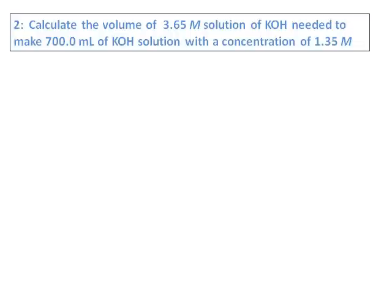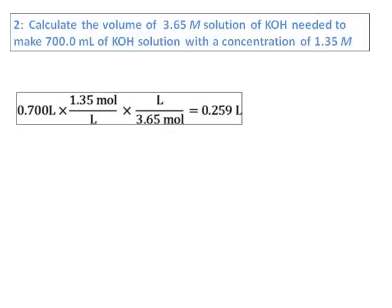We have an original solution whose concentration is 3.65 molar, and I want a new solution, 700 milliliters, which has a concentration of 1.35 molar. We start with what we need. We need 0.7 times 1.35 moles per liter.